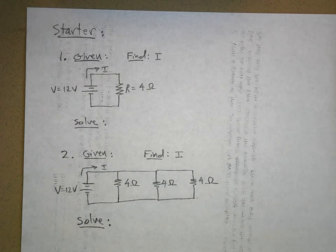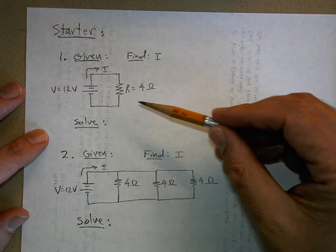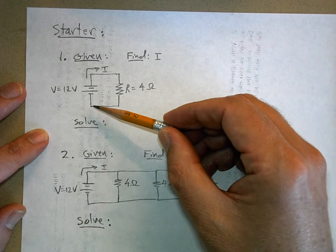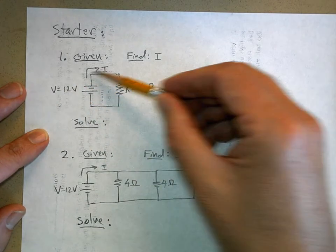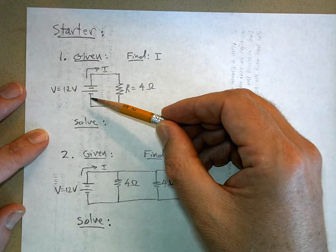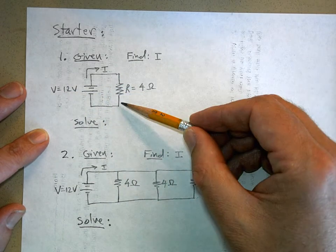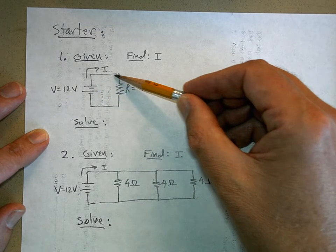Okay, so today's starter involves two problems that are kind of similar to each other. Number one: we've got a circuit here with a 12 volt battery connected to a 4 ohm resistor, and we want to know how much current is this going to push through that 4 ohm resistor.